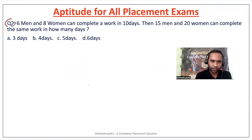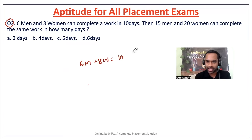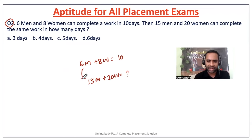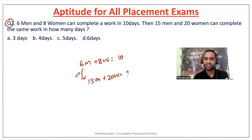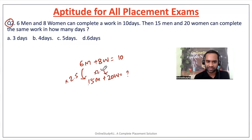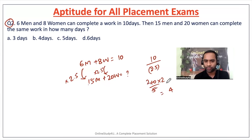Question number two: six men and eight women can complete a work in 10 days. Then 15 men and 20 women will be able to complete the work in how many days? Analyzing: 6 to 15 — half of 6 is 3, so 15 means it's being multiplied by 2.5 at both places. Total days divided by 2.5, which is 5/2, gives 4 days as the correct answer.